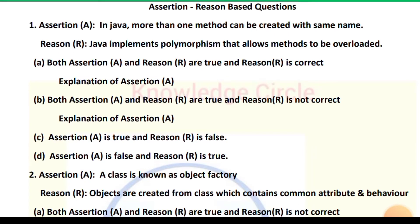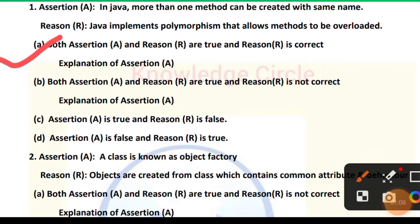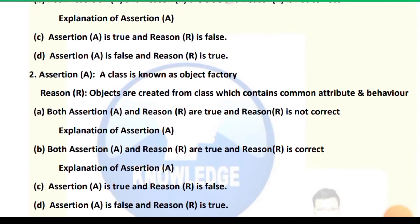Question 1 — Assertion: In Java, more than one method can be created with the same name. Reason: Java implements polymorphism that allows methods to be overloaded, so it is possible to create more than one method with the same name, and this process is called polymorphism. The correct answer is: both assertion and reason are true, and reason is the correct explanation of the assertion.